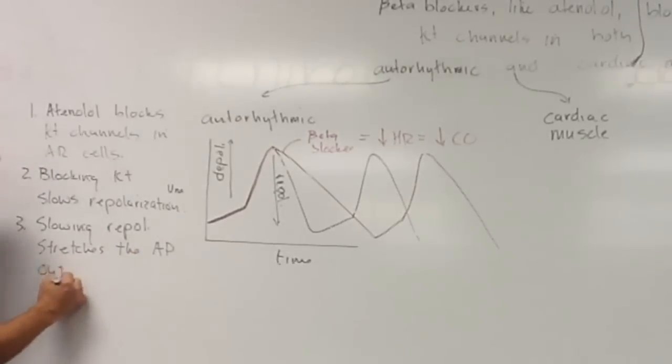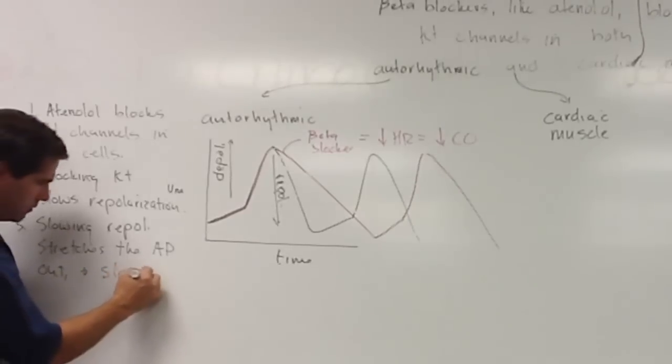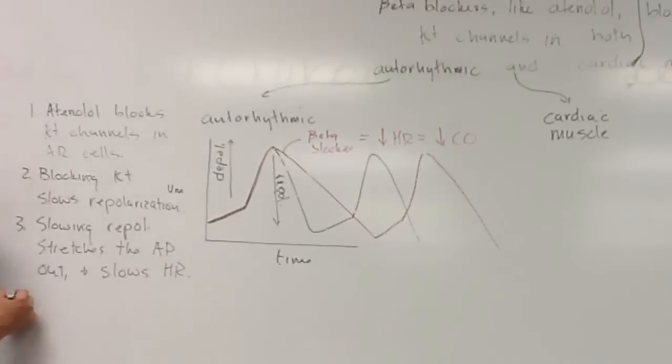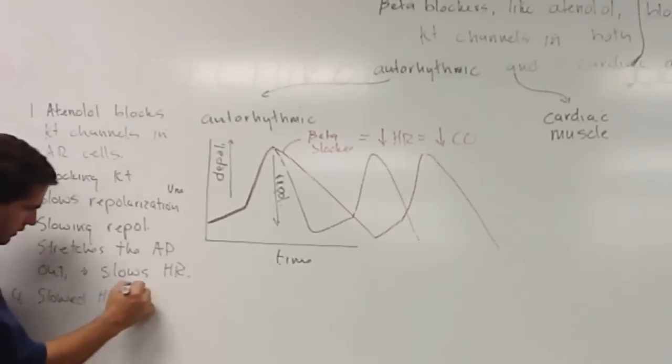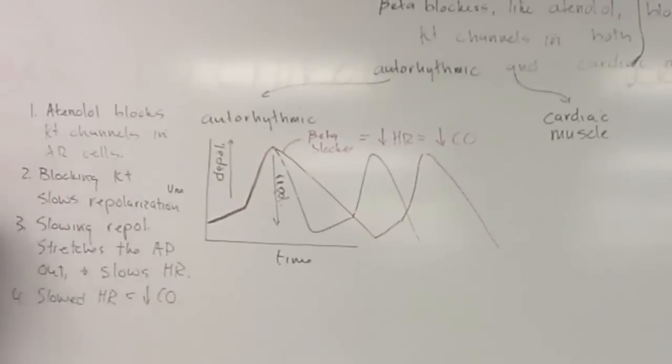Slowing repolarization stretches the action potential, and you can use the abbreviation AP, out and slows heart rate. Slowing heart rate equals a decrease in cardiac output. You'll see that it's a little bit more complex than that, but we can keep it that simple. If you decrease heart rate, you're going to decrease cardiac output.